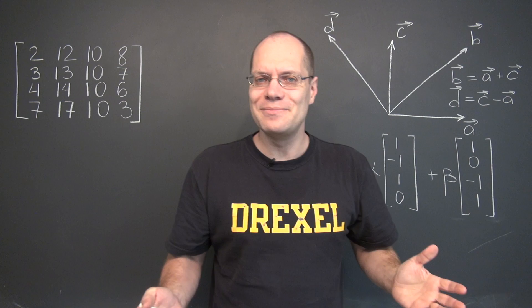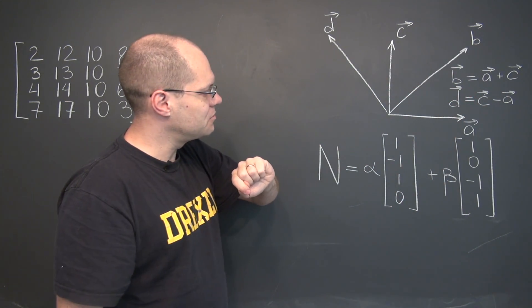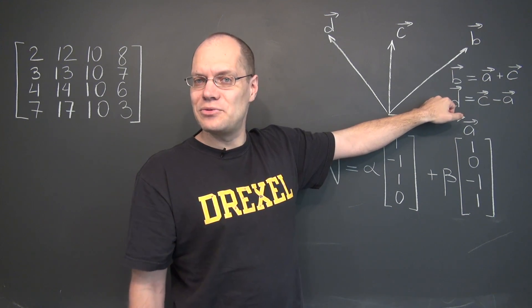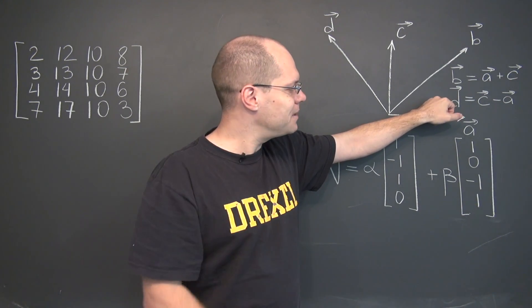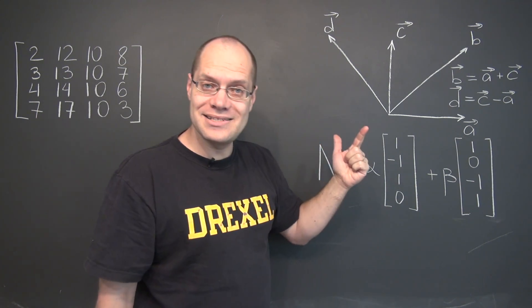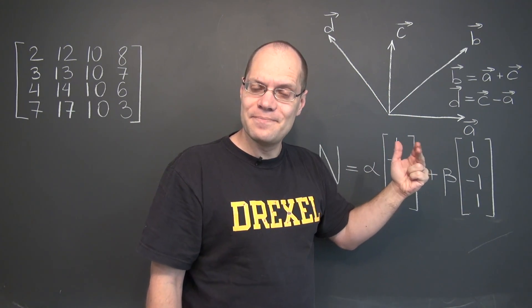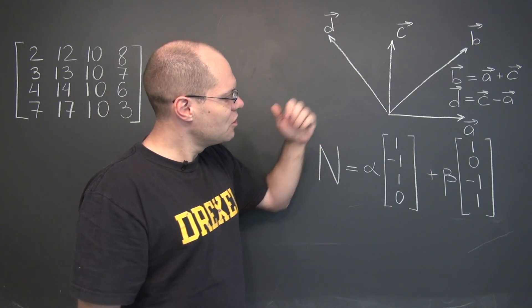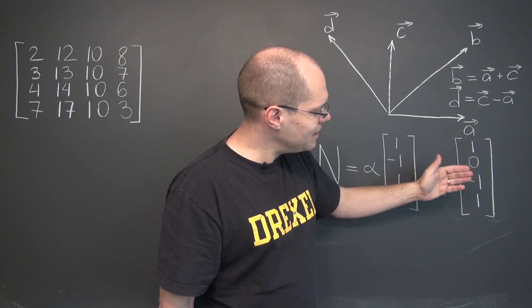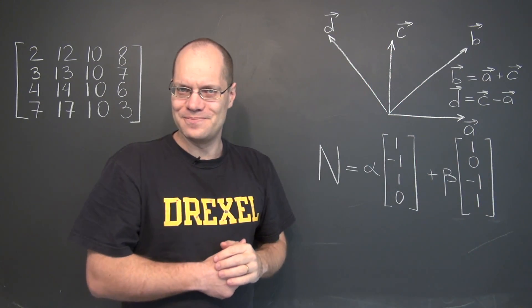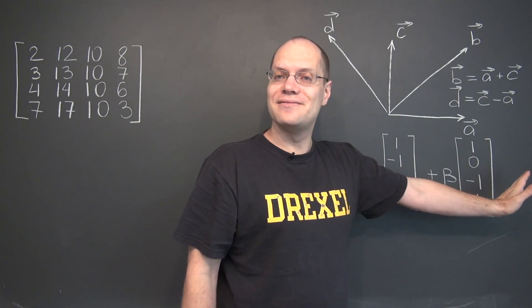So that's where the first element of the null space came from. The second element of the null space came from this relationship. If we rewrite this relationship as a linear combination that equals zero, once again in alphabetical order, we'll have A, no B, minus C plus D equals zero. And the coefficients there were one, zero, minus one, one. So that's where the second element comes from, and that completes the null space.